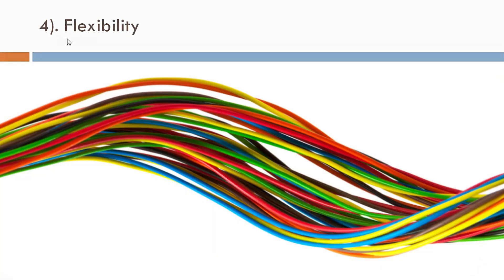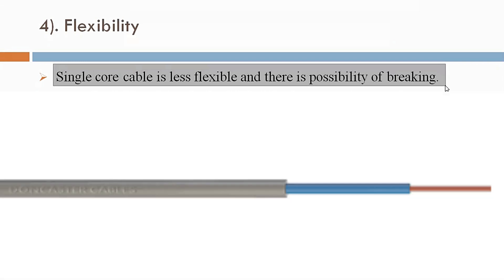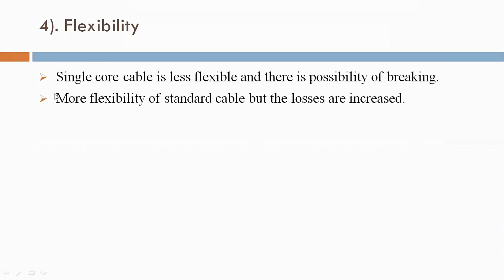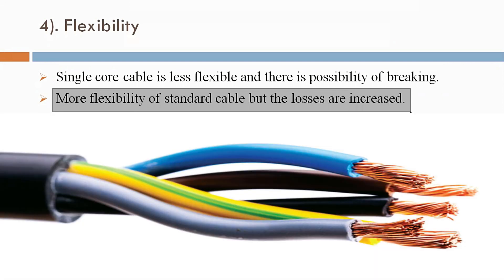Now fourth: flexibility. Single core cable is less flexible and there is a possibility of breaking. More flexibility is offered by stranded cable, but the losses are increased. Standard conductor has more flexibility, but its losses also increase.